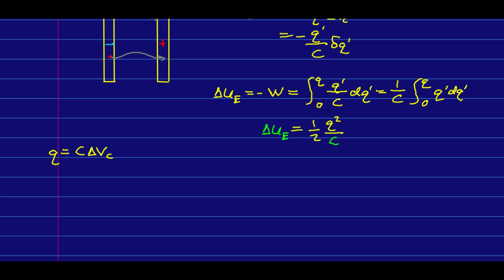There are several other forms we can write that in. If we replace Q, we can get it in terms of the potential difference instead. And often that's a useful form to be able to write it.